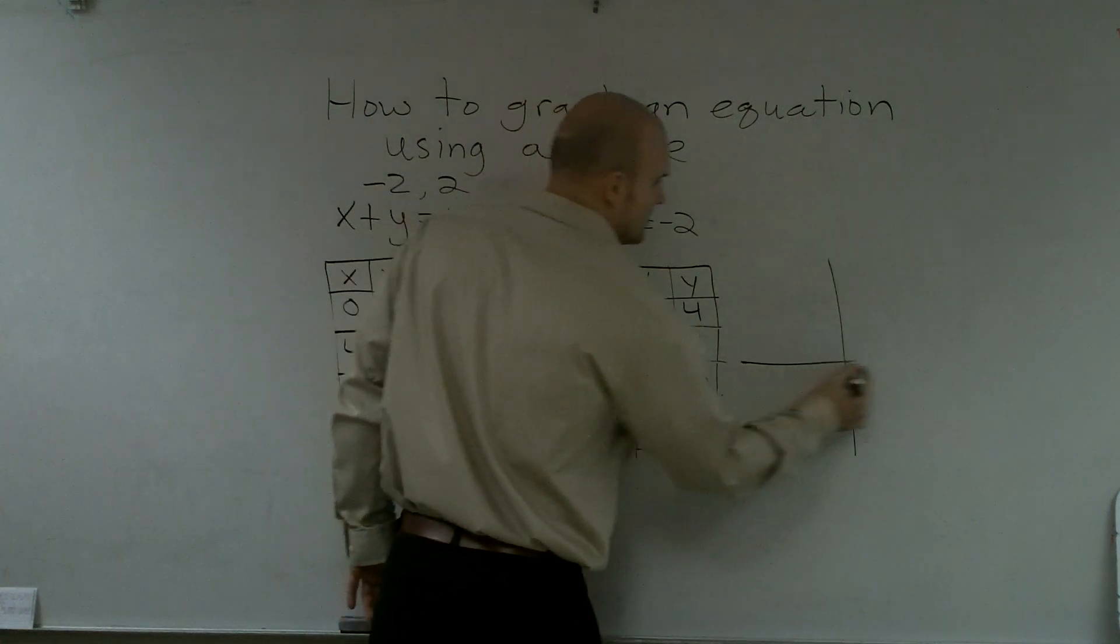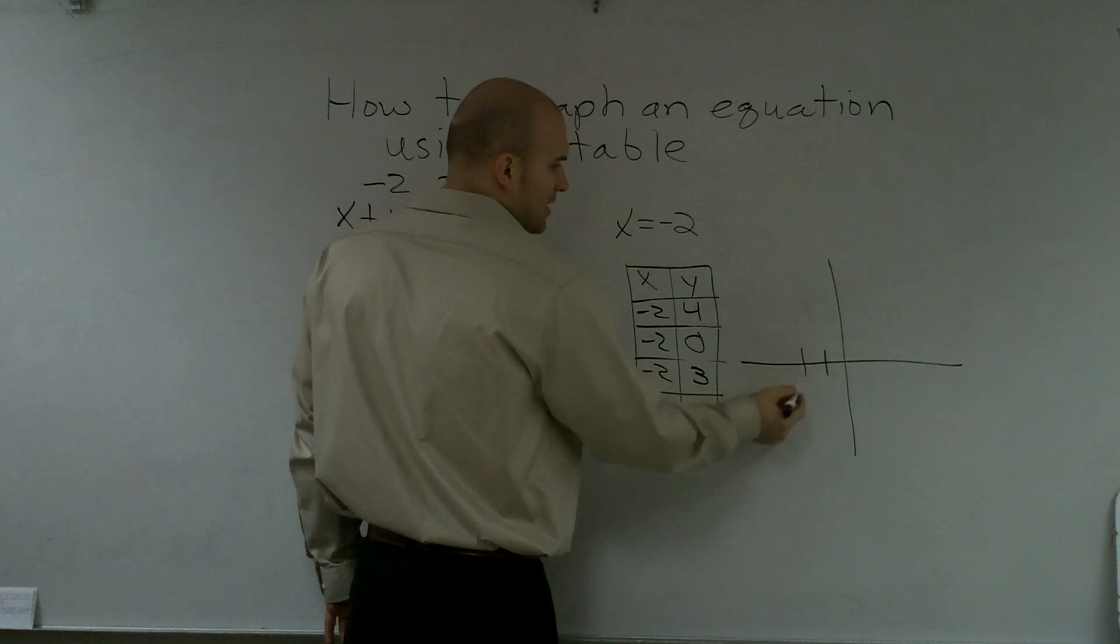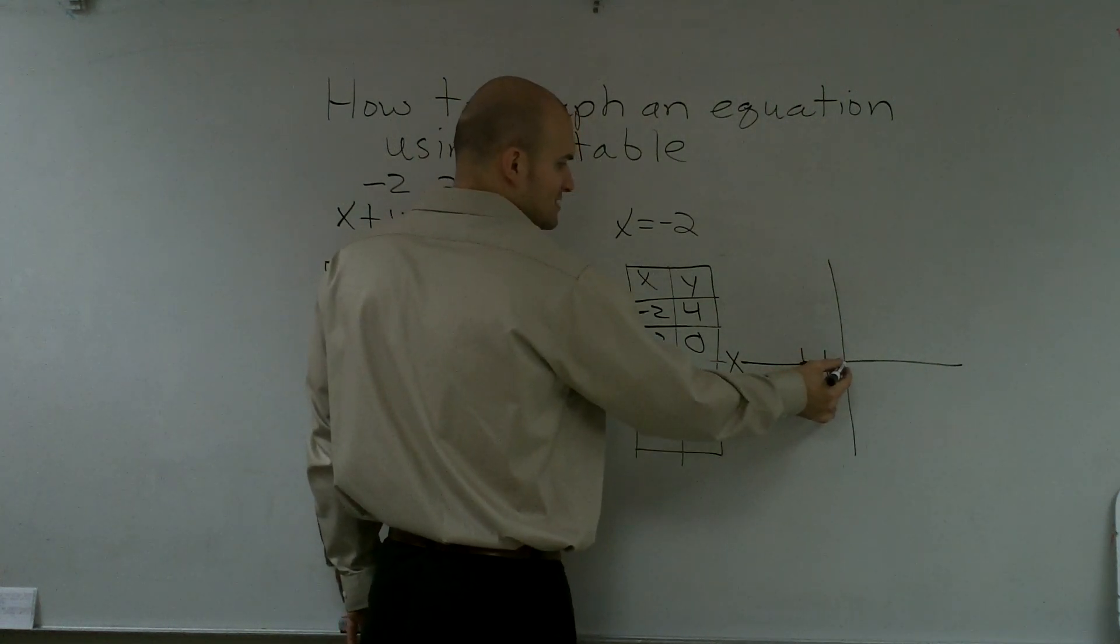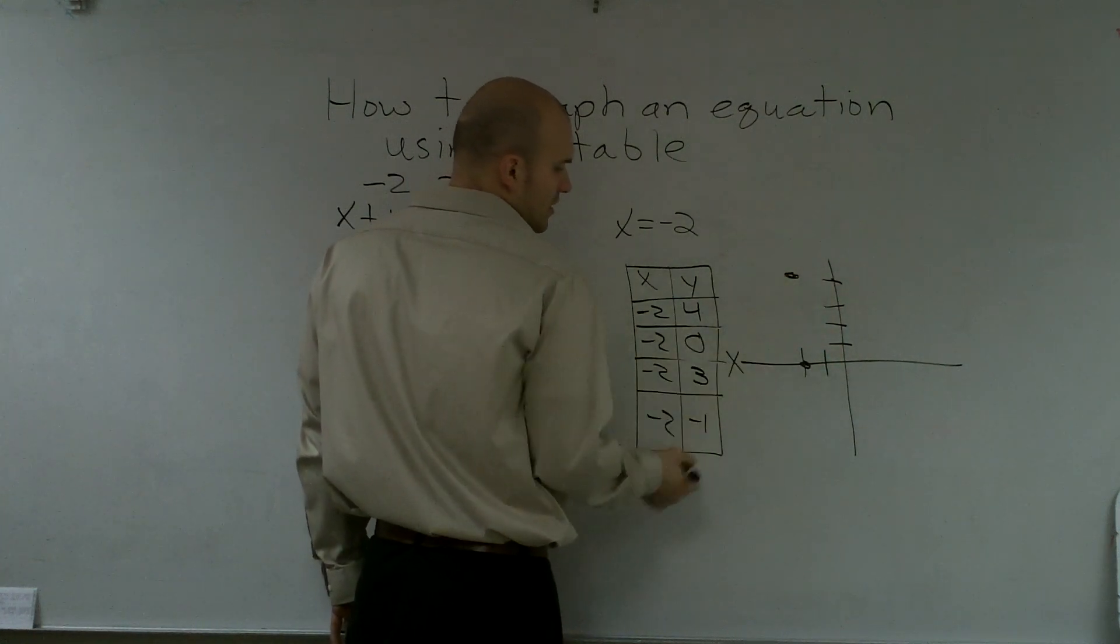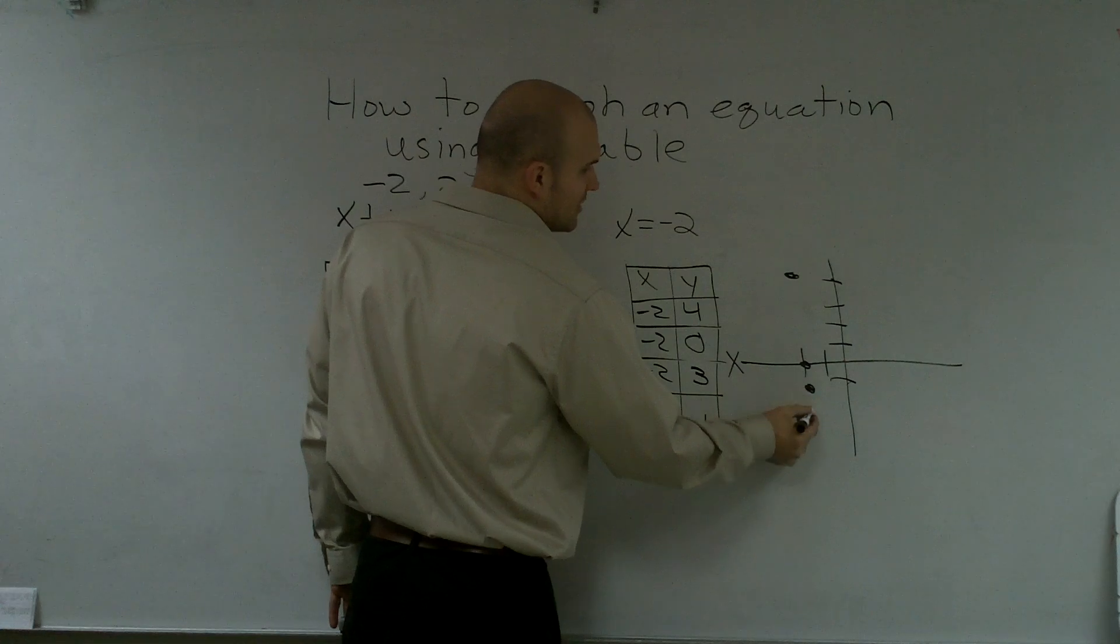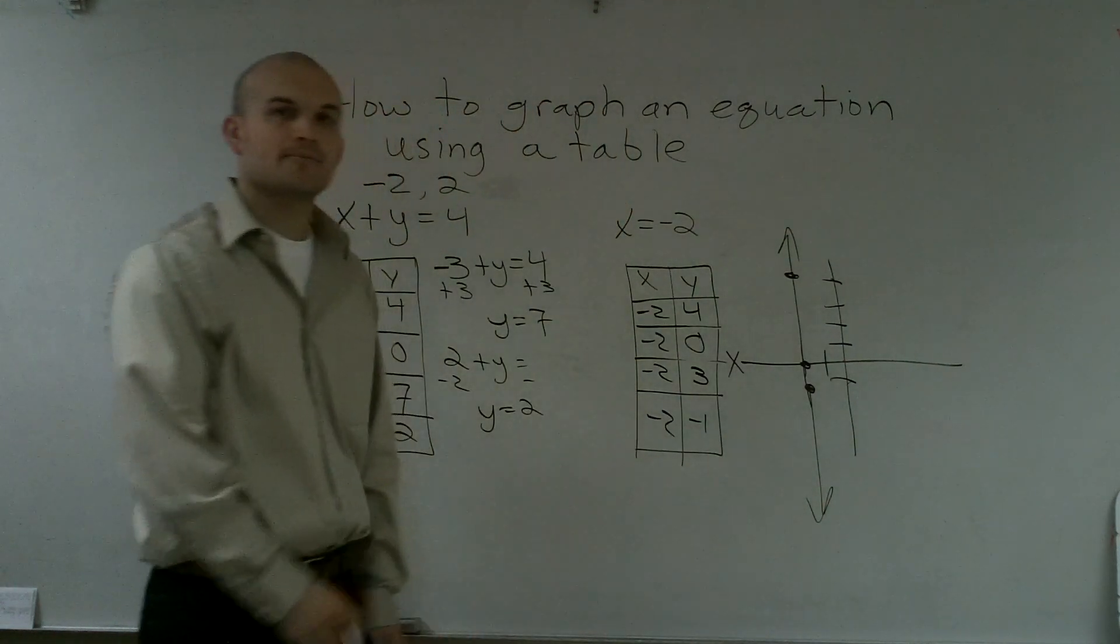So, to graph this, ladies and gentlemen, x always equals negative 2. Negative 1, negative 2, right? That's the x-axis. So, negative 2. When y equals 0, y equals 4, x equals negative 2. When y equals negative 1, x equals negative 2, it's going to be a vertical line up and down.